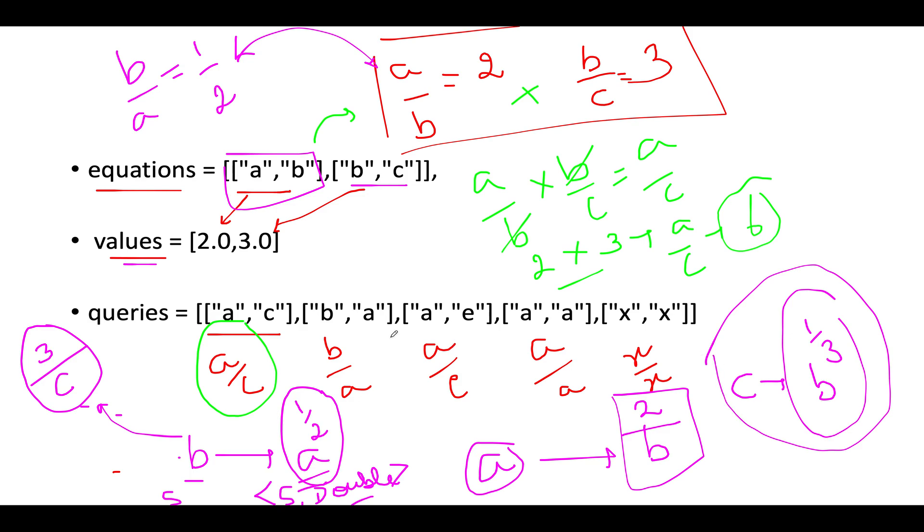Now comes the question: how are we going to find the queries? Let me highlight all the nodes we've built in the graph. These are the four nodes. Let's get started with solving the queries. The first equation we see is A/C. We can start DFS traversal or BFS traversal. The starting node is A, meaning we'll look for the A node in our adjacency matrix or graph. The first node we see is B.